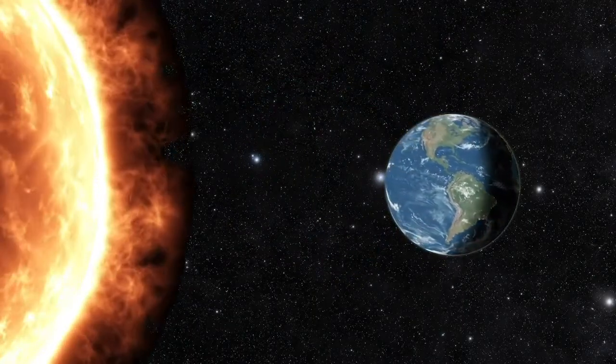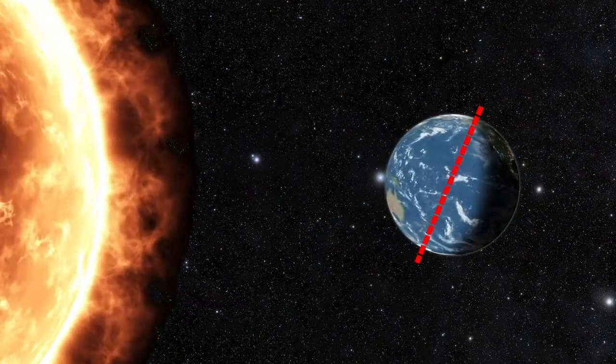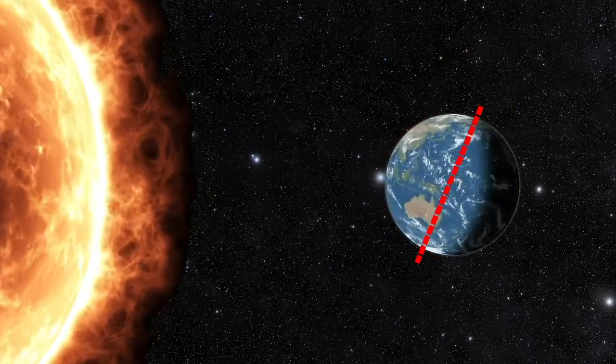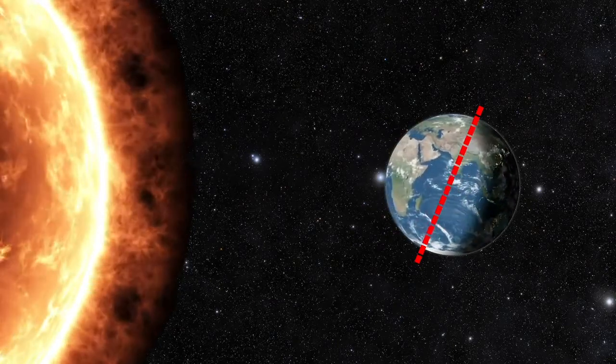One way the Earth moves is by spinning on its axis. An axis is an imaginary line that runs through the Earth's centre. This spinning movement on its axis is called a rotation.